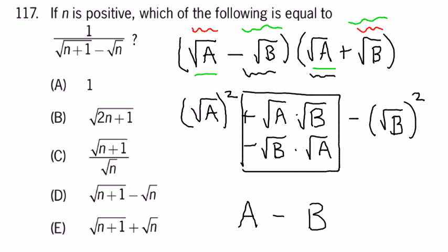Square root of A squared, of course, is A. Square root of B squared, of course, is B. And the end result is A minus B.